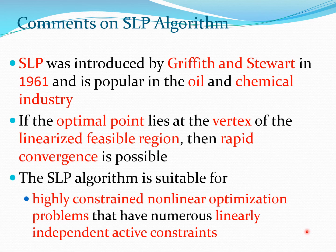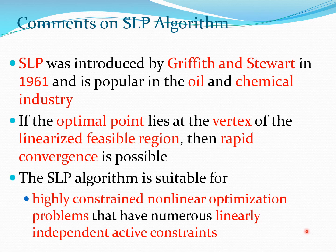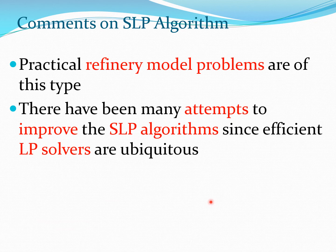Sequential linear programming was developed by Griffith and Stewart in 1961. It is popular in the oil and chemical fields. If the optimal point lies at the vertex of the linearized feasible region, then rapid convergence is possible. The method is suitable for highly constrained nonlinear optimization problems with numerous linearly independent active constraints. Important practical problems of this type are found in refinery model problems.